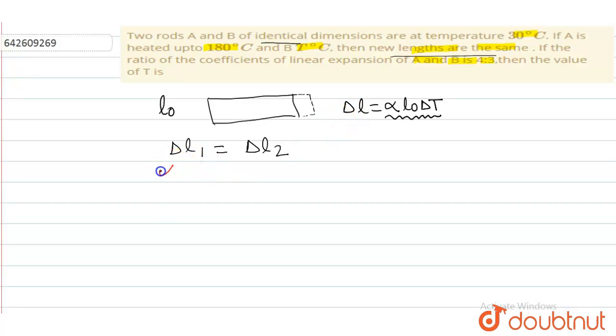Now what is delta l1? We know alpha 1 l1 delta t1, that is equal to alpha 2 l2 delta t2.